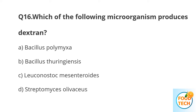Question number 16. Which of the following microorganisms produces dextrin? A. Bacillus polymyxa. B. Bacillus thuringiensis. C. Leuconostoc mesenteroides. D. Staphylococcus.